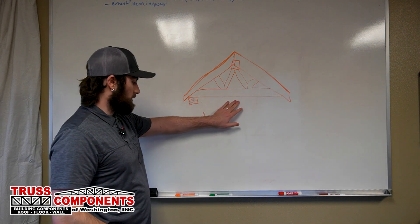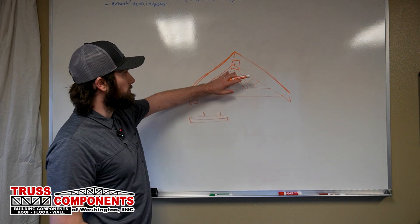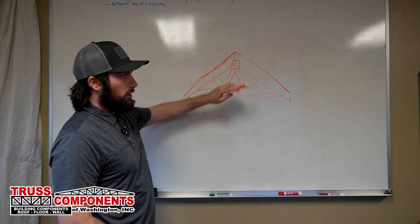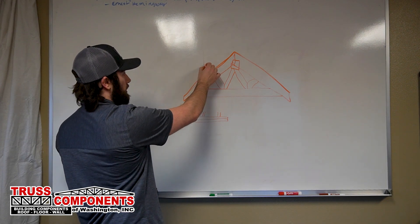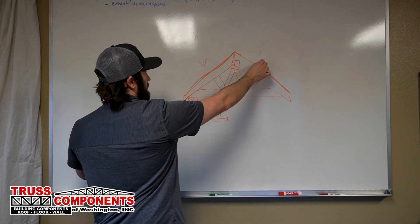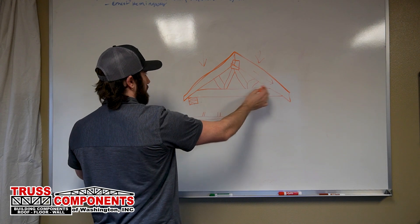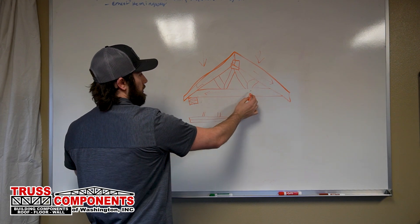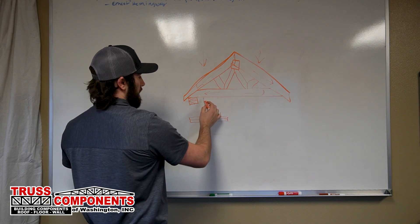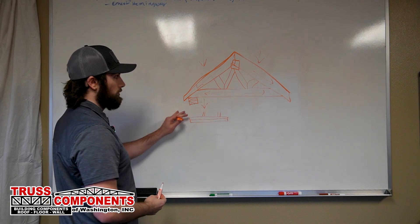Now these wood members are held together like I said with the metal plates, and we have that load coming down and going out through the bottom chord, the top chord, the webs, and then down through the bearings.